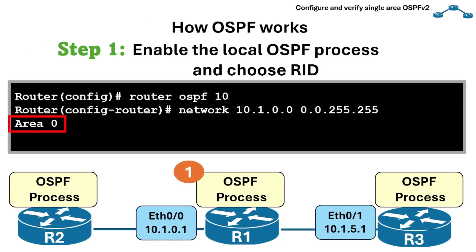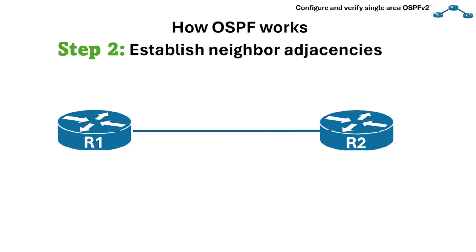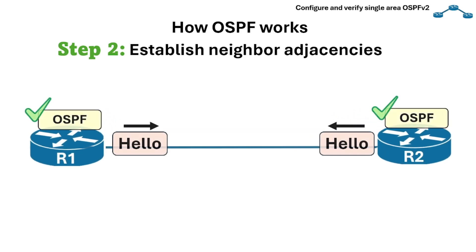Going back to the global network area command, this is where you assign an area — area 0 in this example. After the OSPF process ID is enabled and a router ID is chosen, the next step is to establish neighbor adjacencies. Once the routing process is enabled on a router, it starts sending hello messages on all OSPF-enabled links to determine whether neighbors are present on those segments.